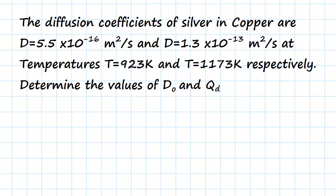In this question, the diffusion coefficients of silver in copper are D equals 5.5 times 10 to the minus 16 meters squared per second, and D equals 1.3 times 10 to the minus 13 meters squared per second, at temperatures T equals 923 Kelvin and T equals 1173 Kelvin respectively. Determine the values of D₀ and Qd.